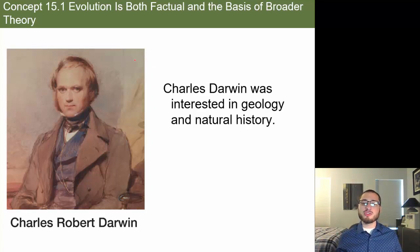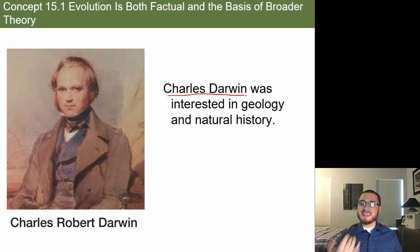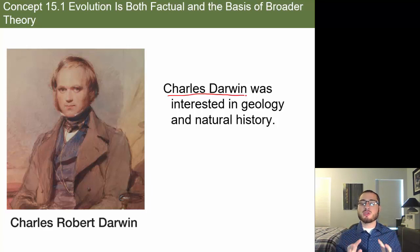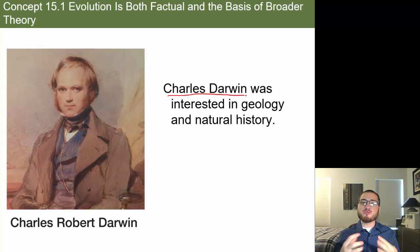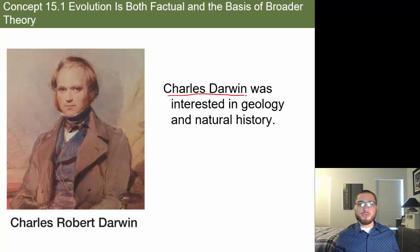Charles Darwin gets all the credit for the theory of evolution because he wrote 'The Origin of Species,' in which he discusses descent with modification and natural selection. These are two key terms. Interestingly, Darwin didn't really use the word 'evolution' — he referred to the process as descent with modification, driven by natural selection.